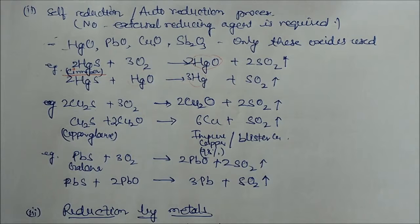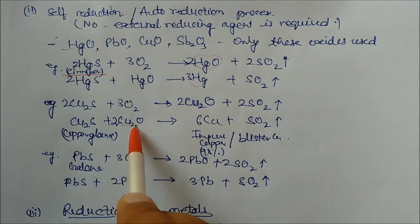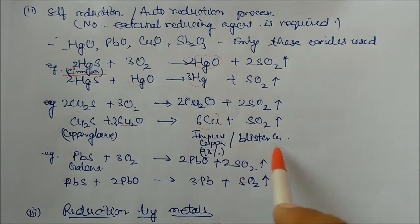Similarly, this one copper glance, you can see this acting as a reducing agent. You will get the pure impure copper. It is called as a blister copper also, which contains 98% copper.